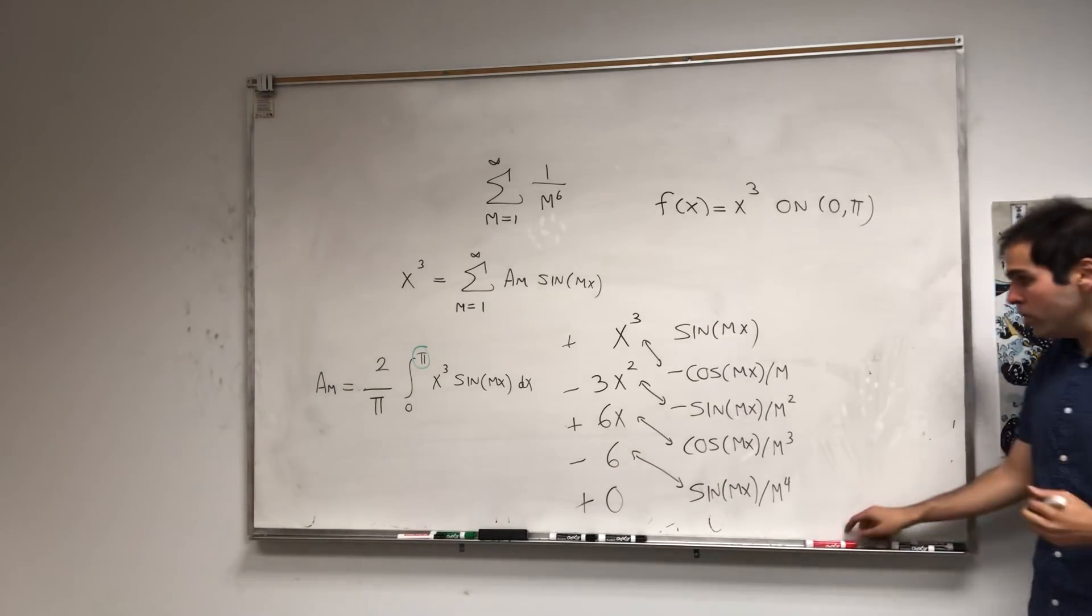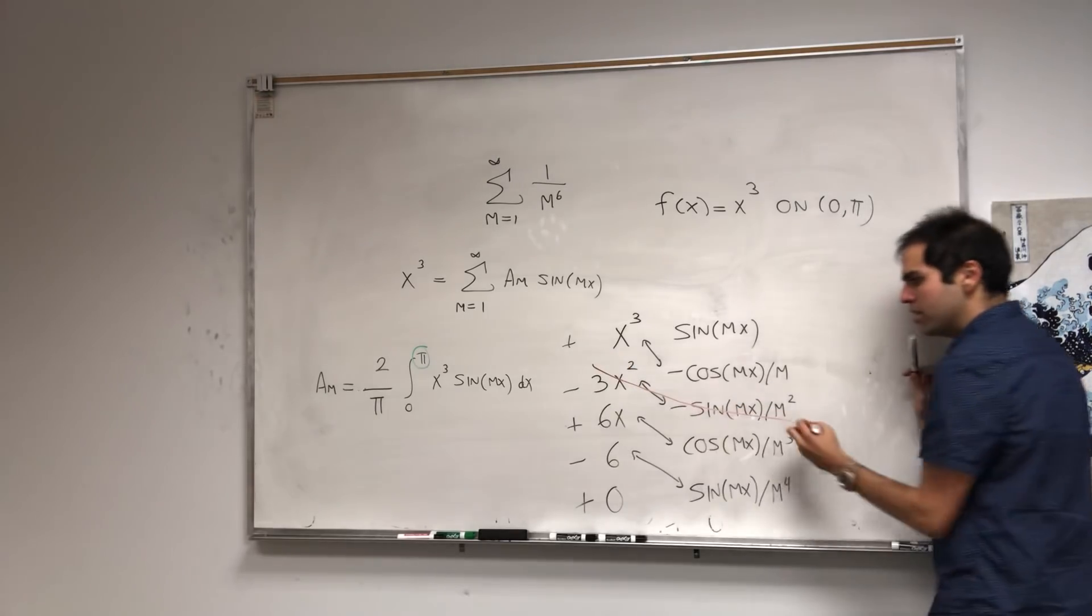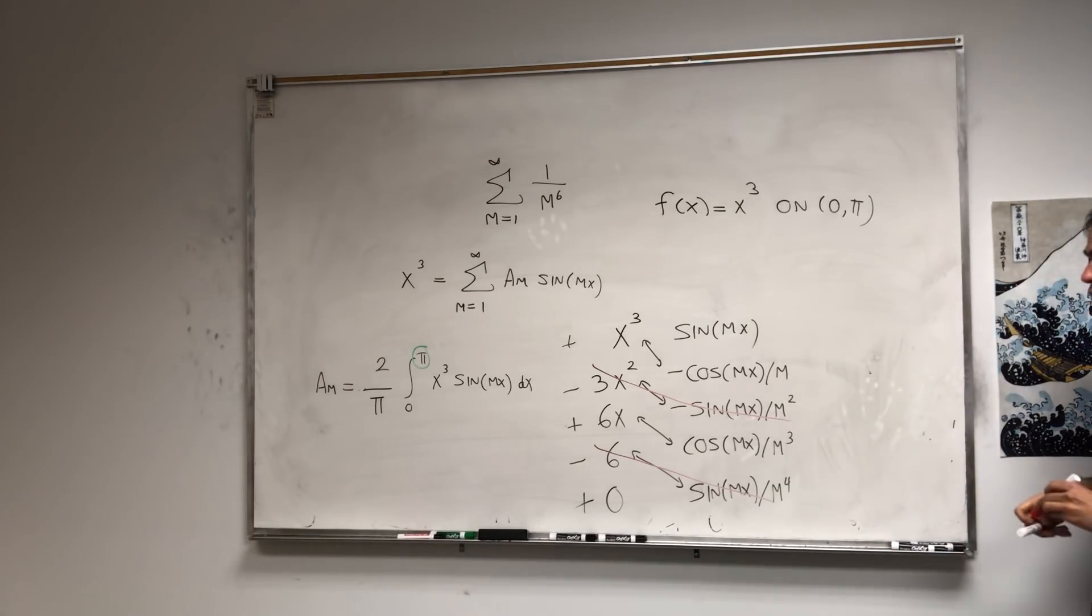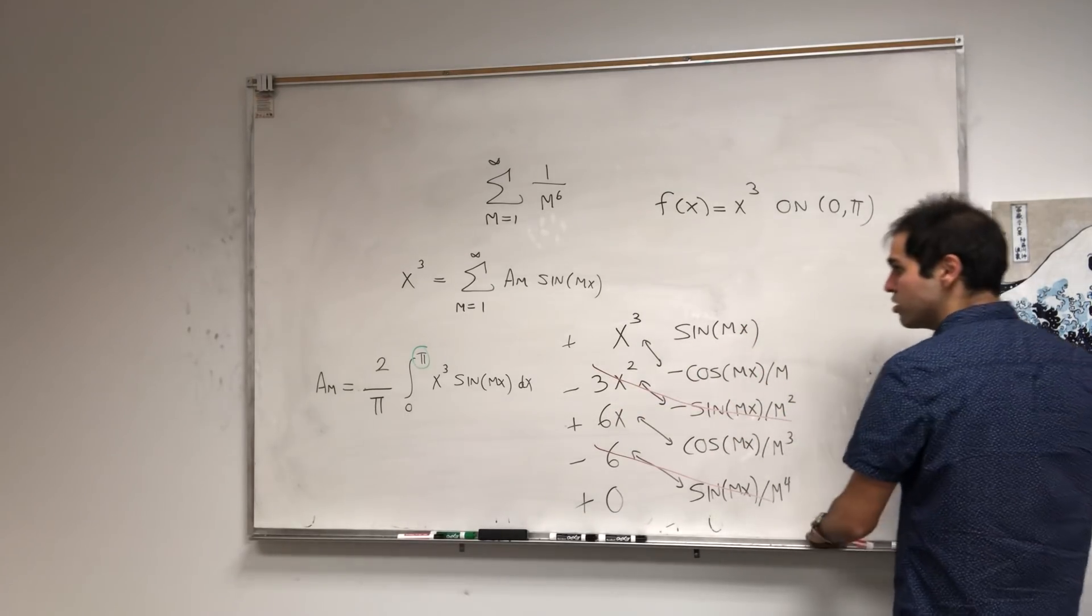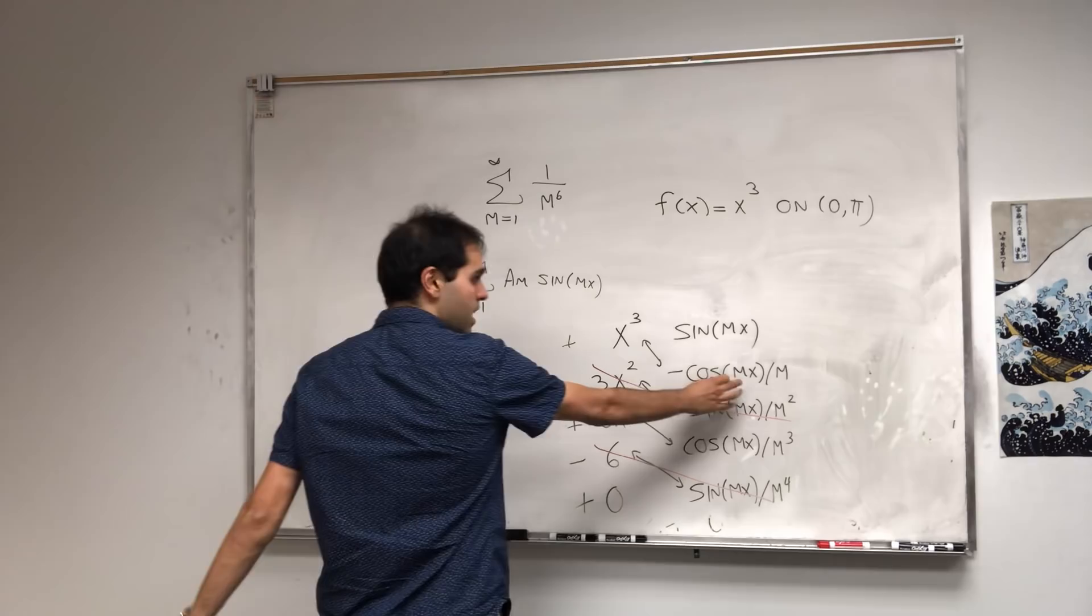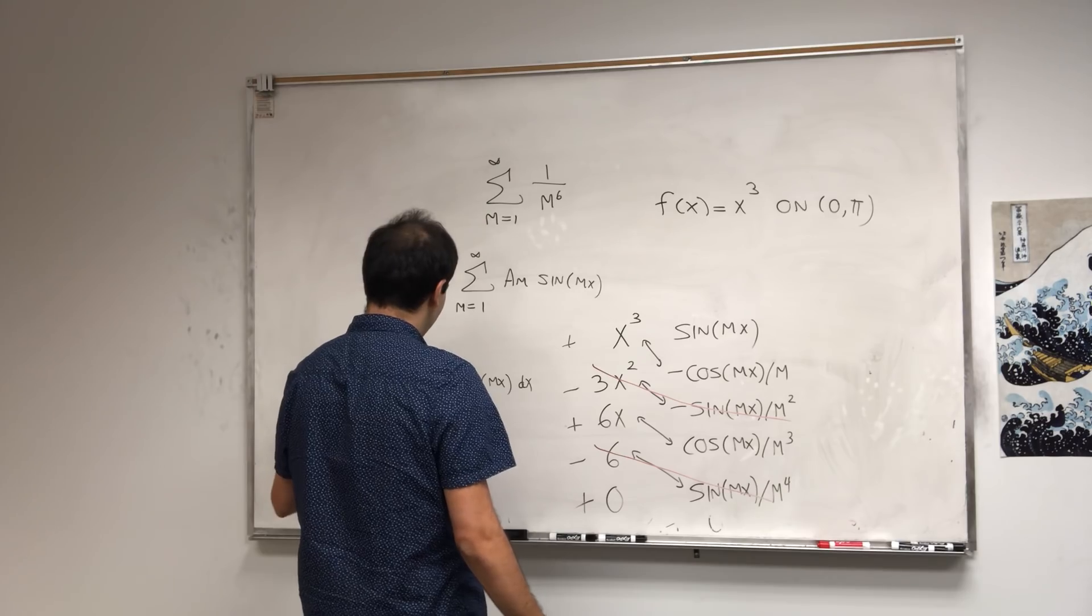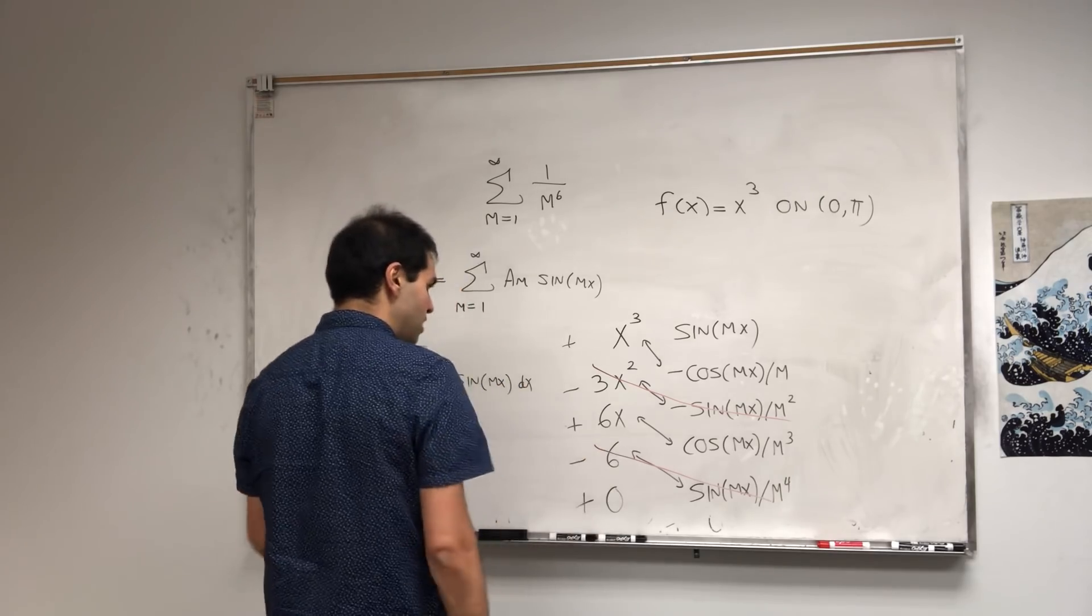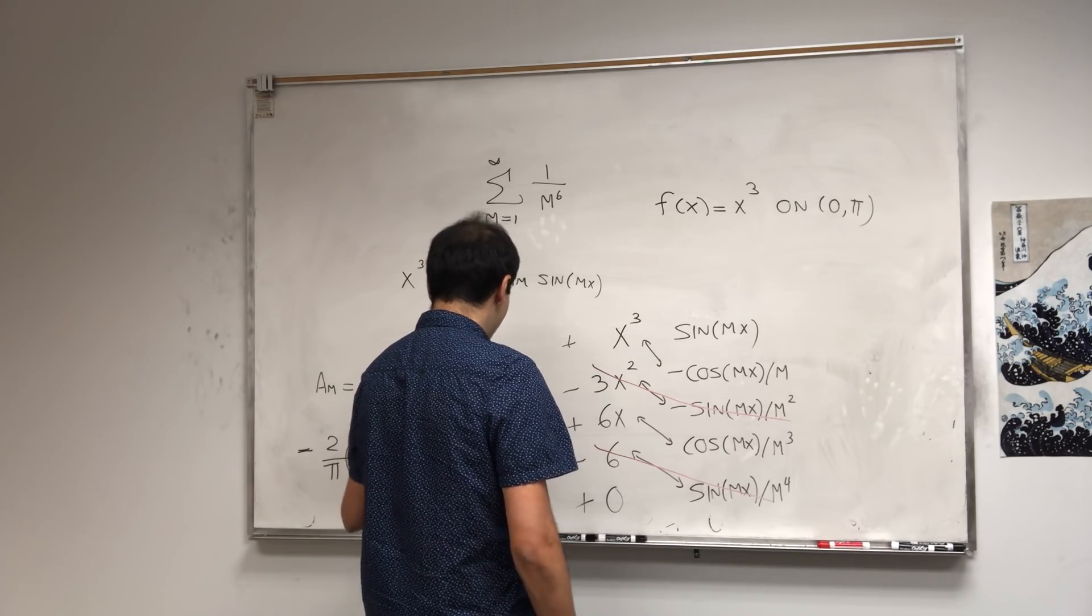Now, here's the cool thing. You don't need to evaluate all the cross terms, because sine of pi m is 0, and sine of 0 is 0. So you can actually ignore this line, and similarly, you can ignore that line. Moreover, this one evaluated at 0 is just 0. So really, you just have to evaluate everything at pi.